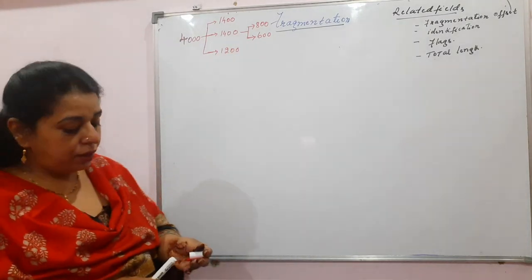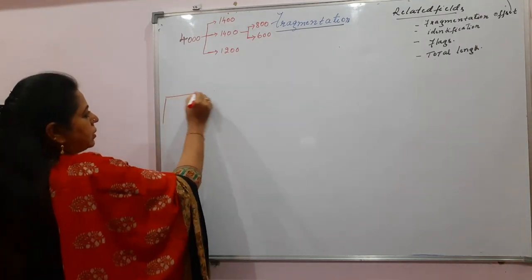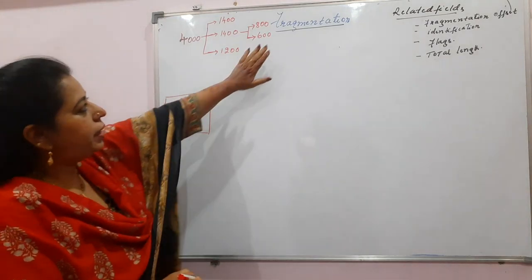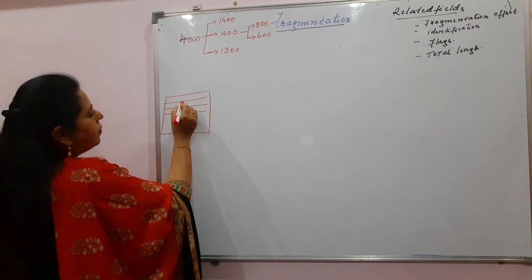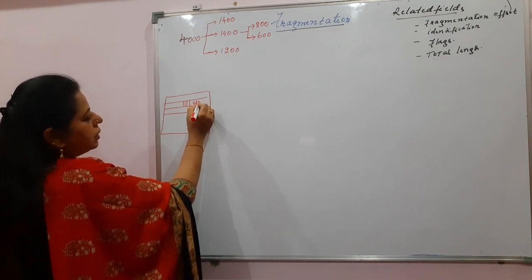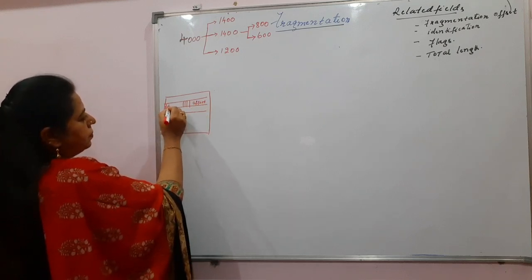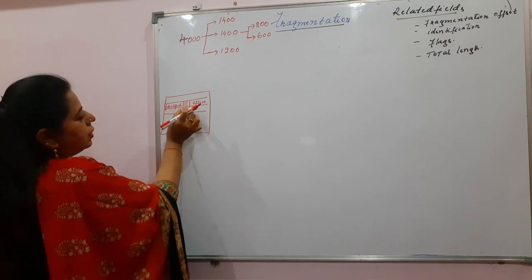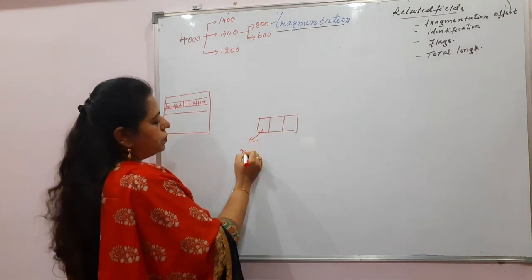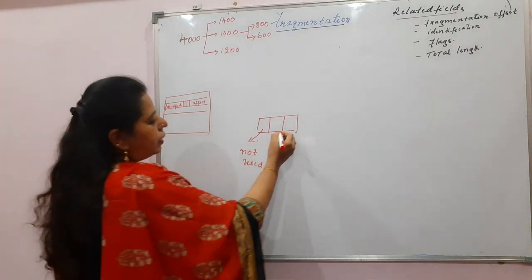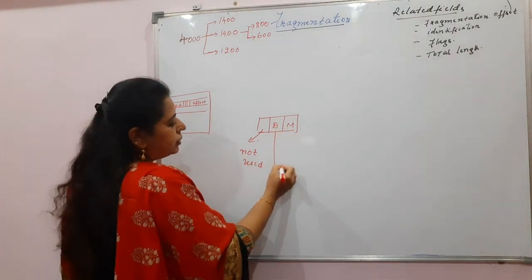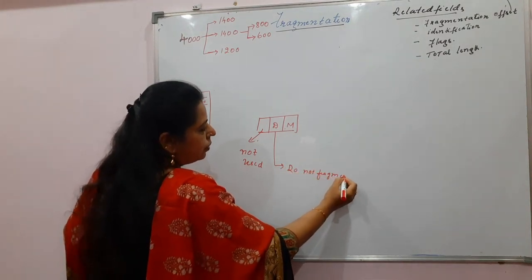In this problem, the original datagram of 4000 bytes is divided into three fragments; the middle fragment is further divided into 800 and 600. You must fill the fields related to fragmentation. In the second row of the IPv4 header, 16 bits are for identification, 3 bits for flags, and 13 bits for the fragmentation offset. In the flags field, the leftmost bit is unused; the second bit is D (Do Not Fragment) and the third is M (More Fragment).